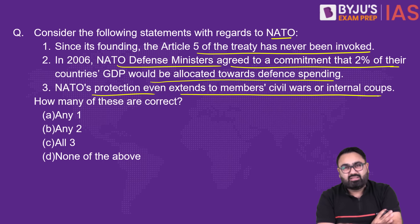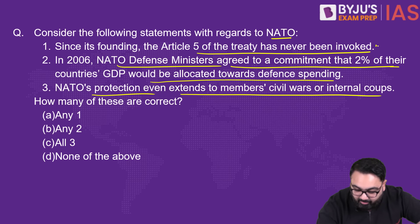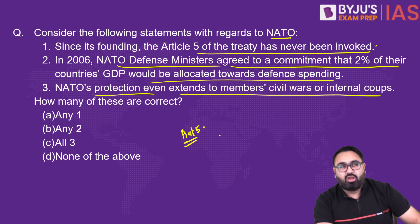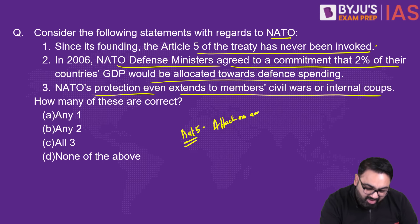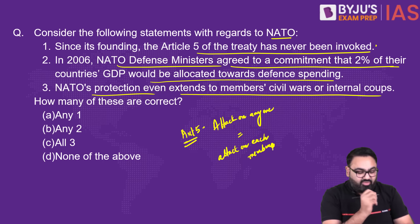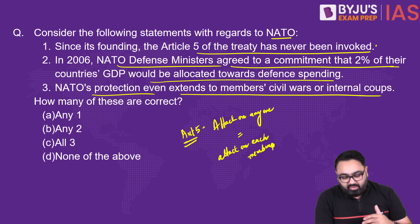NATO always remains in the news — more so because of the Russia-Ukraine war and their support to Ukraine. Article 5 is NATO's most famous provision, which is why smaller countries want to join. It simply says an attack on any one member is equal to an attack on each member — if any country attacks even one NATO member, all will come together to retaliate. It is a concept of one for all, all for one.